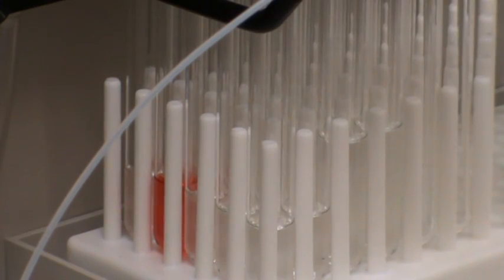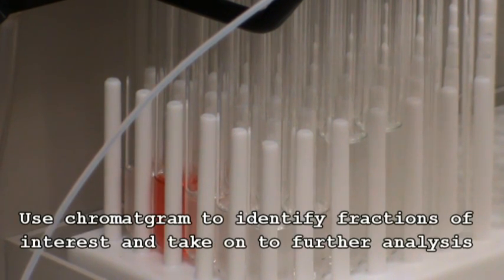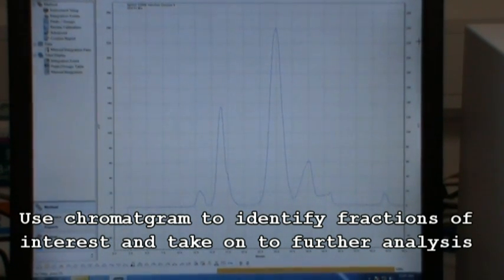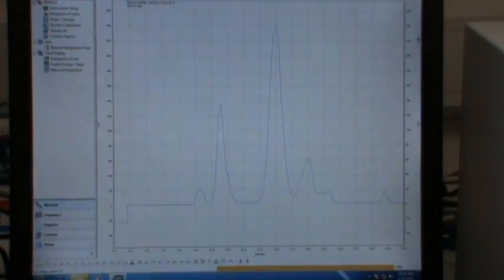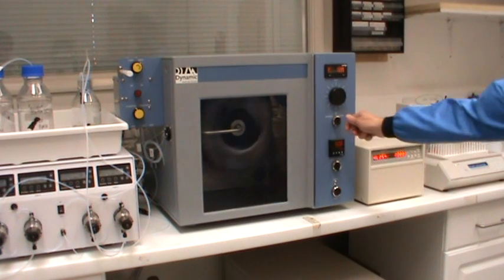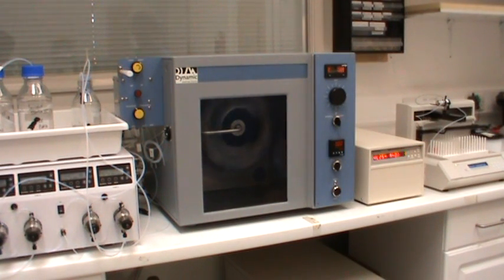Collect the fractions either on a timed basis or a peak driven basis. After around 40 minutes, all the fractions should have been collected. Use the chromatogram to identify the fractions of interest and then take them on to further analysis. Now turn off the CCC instrument and the chiller as your separation is now finished.